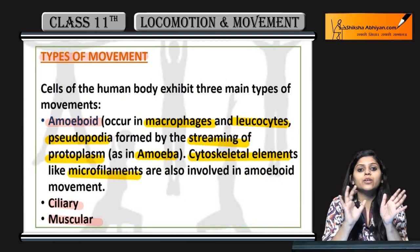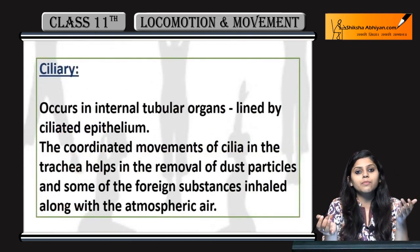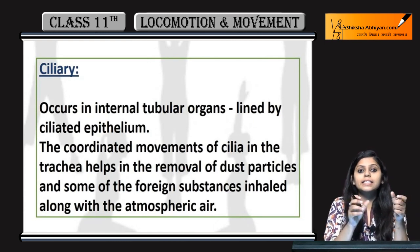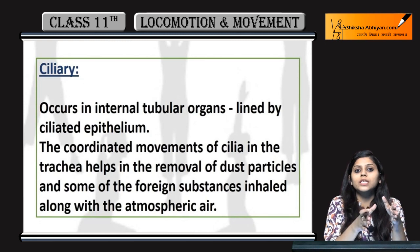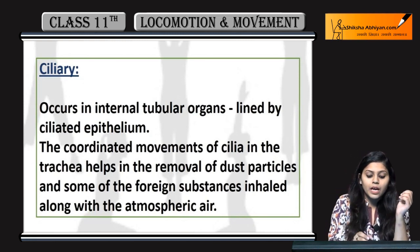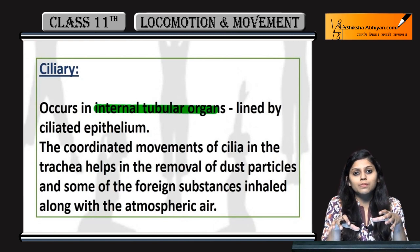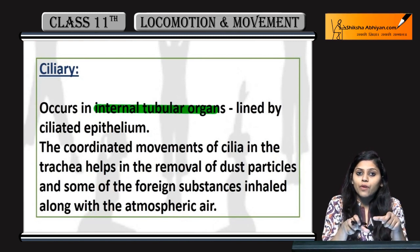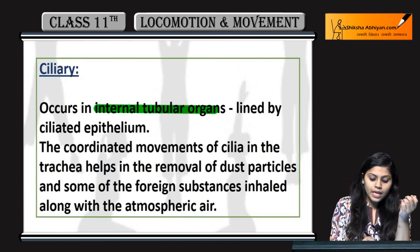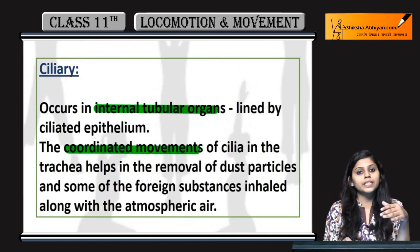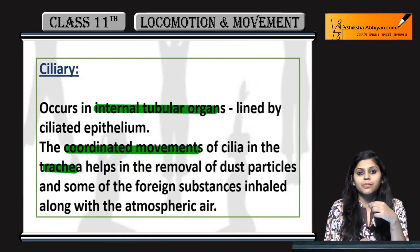Next is ciliary type of movement. Cilia ke through jo movement hogi usse ciliary movement kehenge. Cilia internal tubular organs mein present hote hain. For example, trachea — jo ek tubular structure hai — mein ciliary movement hoti hai, aur yeh co-ordinated movement hoti hai.